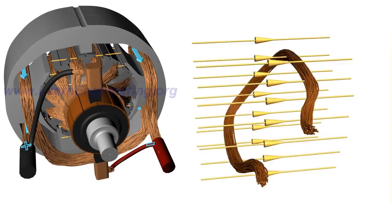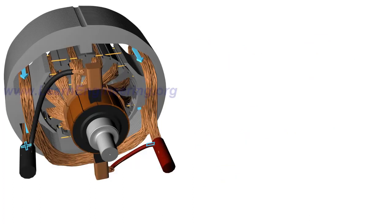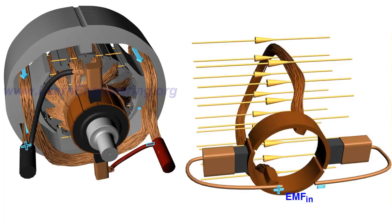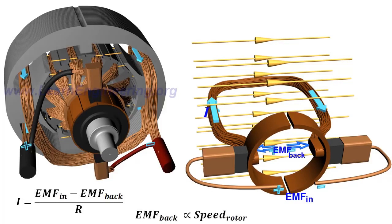A rotating loop in magnetic field will produce an EMF according to the principle of electromagnetic induction. The case of rotating armature loops is also the same. An internal EMF will be induced that opposes the applied input voltage. The back EMF reduces armature current by a large amount. Back EMF is proportional to the speed of the rotor.